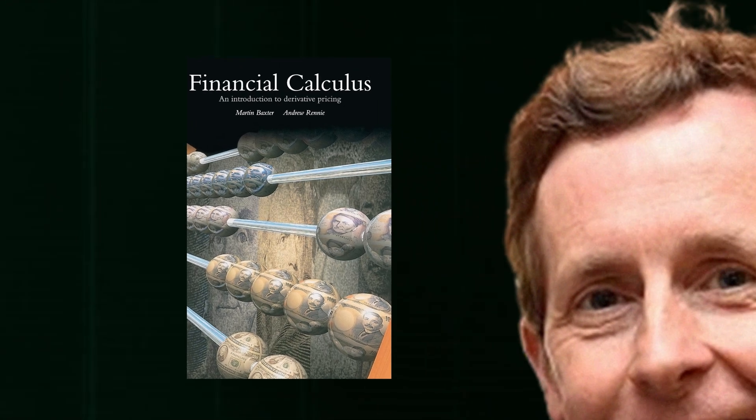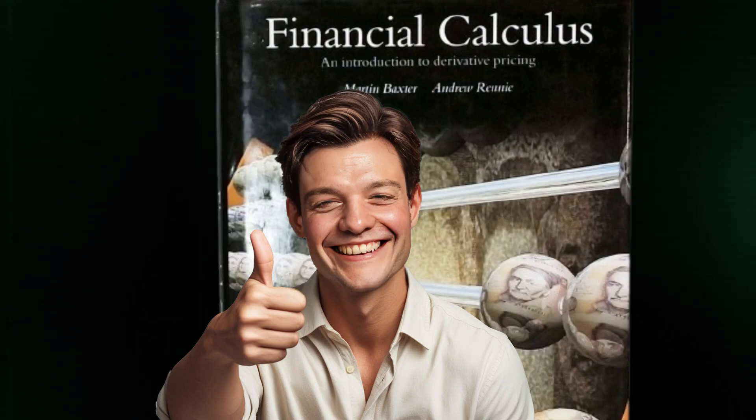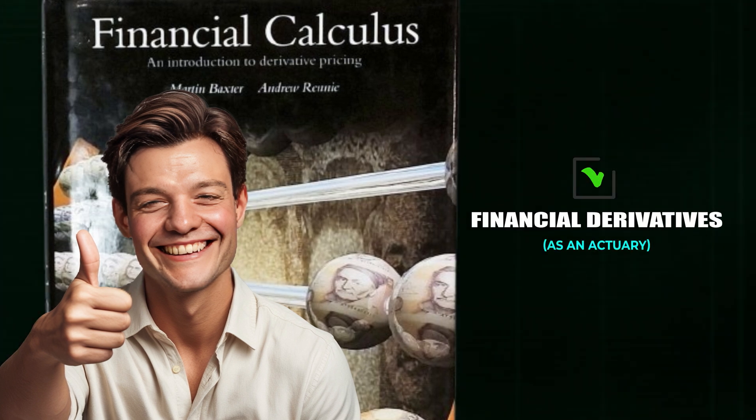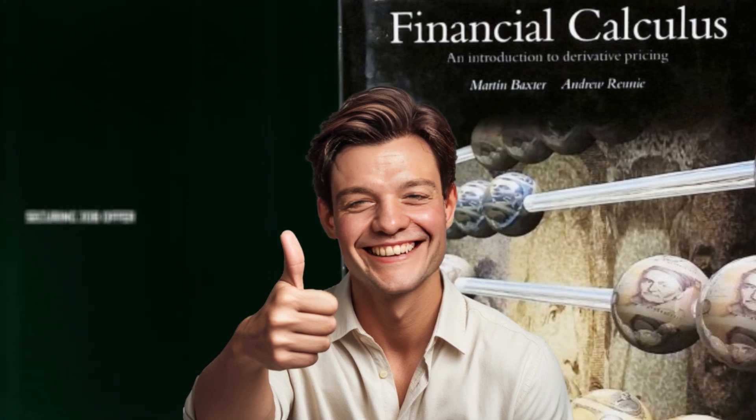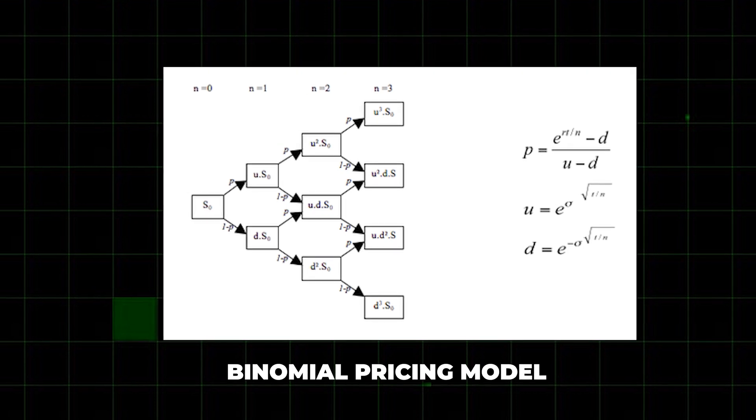Book number one is Financial Calculus by Martin Baxter and Andrew Rennie. This was my very first book on mathematical finance and I bought it just before I went to university. It gives you the best introduction to the kind of maths you'll need to understand derivative pricing and in particular the Black-Scholes formula. This book is actually part of the recommended reading if you want to specialize in financial derivatives as an actuary, and I used the knowledge I gained from it in securing my job offer. In my interview I was asked how I would price an option from first principles and I used the binomial pricing model from the start of this book.